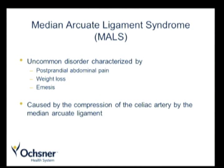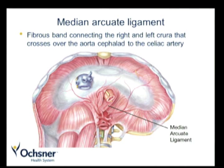Median Arcuate Ligament Syndrome is a rare disorder typically characterized by three symptoms: postprandial abdominal pain, weight loss, and emesis. It is thought to be caused by compression of the celiac artery by the Median Arcuate Ligament, a fibrous span connecting both the right and left crura that runs over the aorta cephalad of the celiac artery. Symptoms are thought to result from relative mesenteric ischemia coupled with possible steal phenomenon from SMA collaterals.